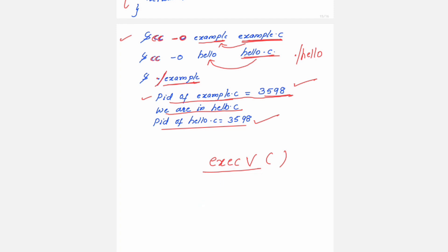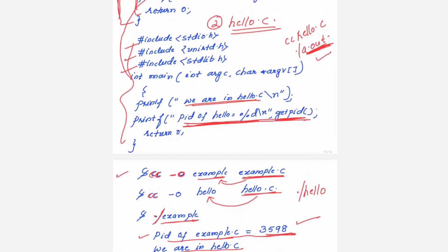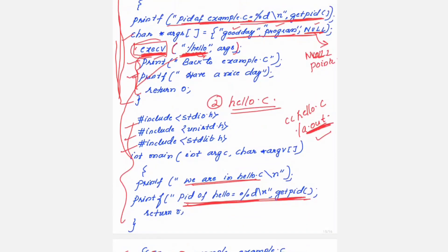Once you replace the program, you are actually having one program only, so the PID definitely remains the same. In contrast, with the fork system call, when it creates a child process, the parent gets one PID and the child gets a new PID. But when an existing program is replaced with a different program, the PID remains the same. Also note: the statements 'Back to example' and 'Have a nice day' will not get printed at all, because from the EXECV call onwards, execution has been taken over by the hello program.